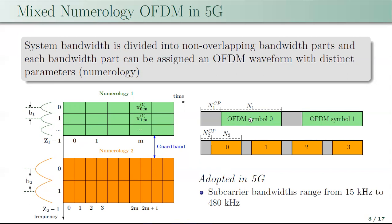In the current 5G NR standard, the subcarrier spacing ranges from 15 kHz to 480 kHz.